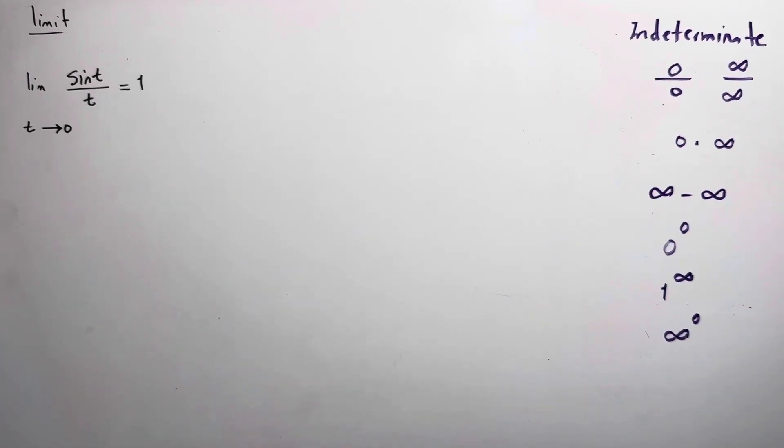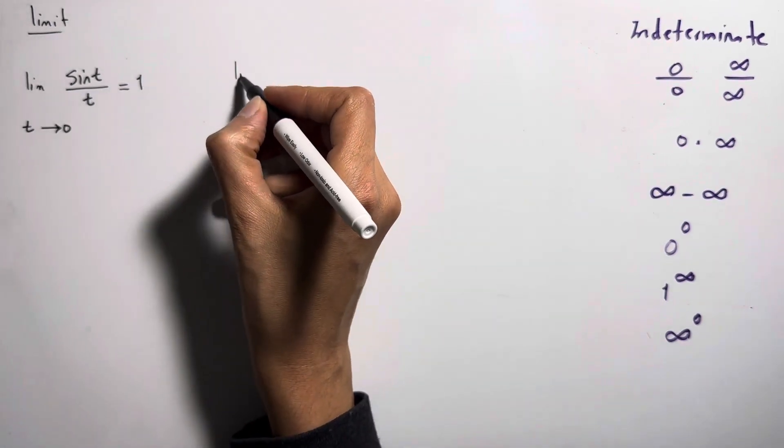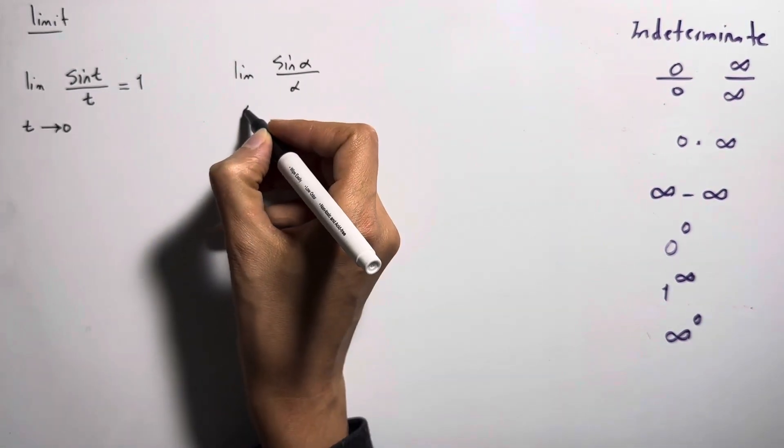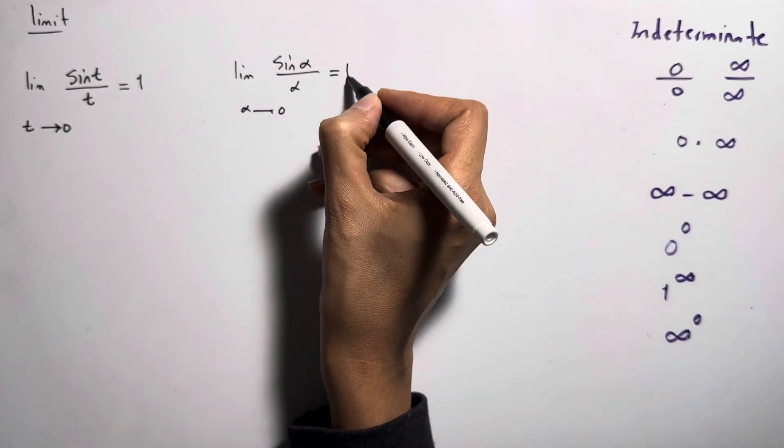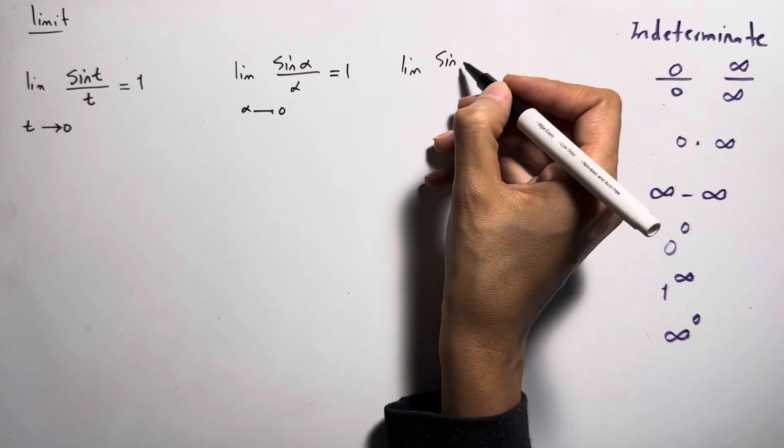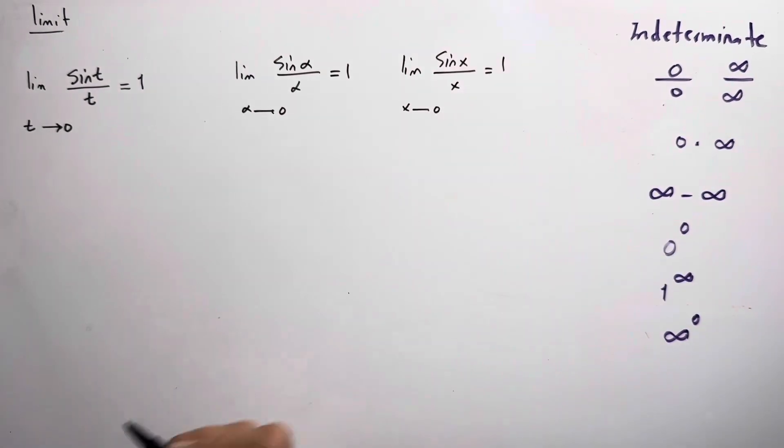We call that the limit of sine t divided by t as t goes to 0 is always 1. It's the same as writing limit of sine alpha divided by alpha as alpha goes to 0 equals 1, or limit of sine x divided by x as x goes to 0, it is equal to 1.